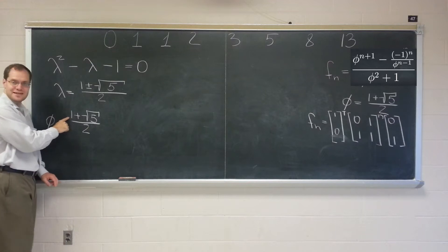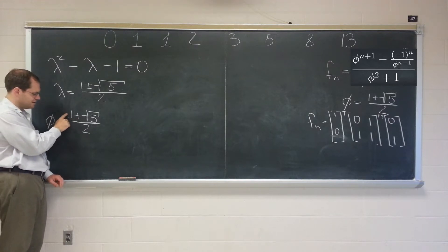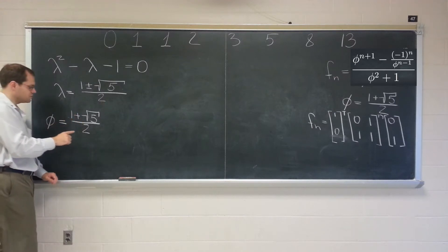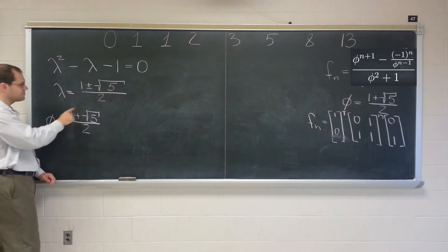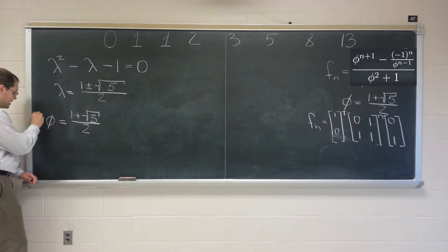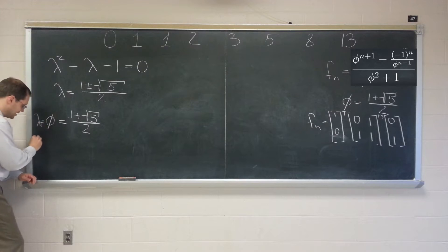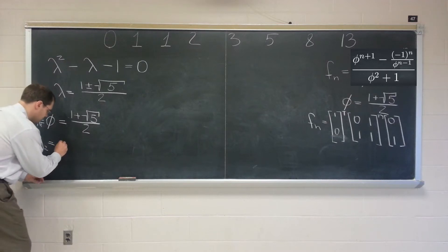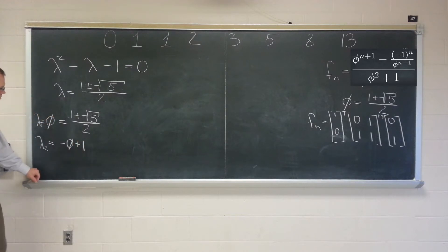The other one is minus phi plus 1. Do you guys see that? If you do minus phi, then this gets a minus, and this gets a minus. So if you do plus phi, then it becomes the same thing with a minus sign. So the other one, so that's lambda 1. And lambda 2 is, what did we say? Minus phi plus 1.